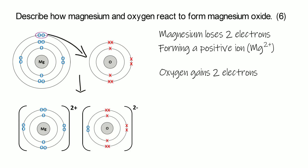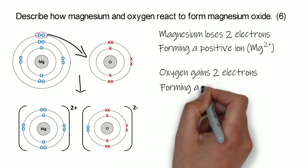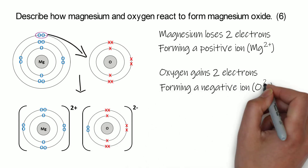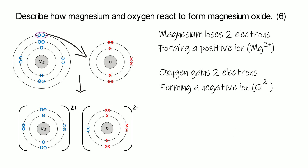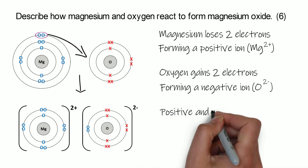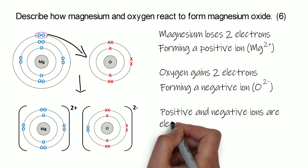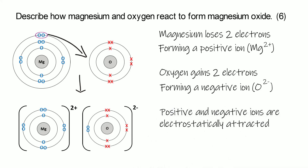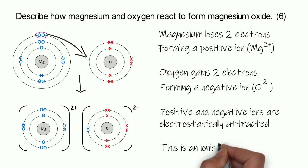This is called an oxide ion — if you call it an oxygen ion you'll very often lose marks, because it's not called an oxygen ion, it's called an oxide ion, O²⁻. Because the magnesium ion is positive and the oxide ion is negative, there's going to be an electrostatic attraction between them — that is your ionic bond and it holds them together.